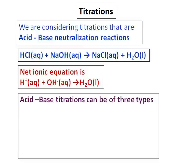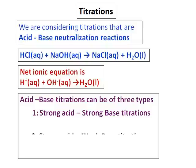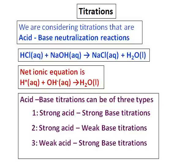And the acid-base titrations can be of three types. Number one, a strong acid-strong base titration. Number two, a strong acid-weak base titration. And number three is a weak acid-strong base titration. We don't have weak acid-weak base titration.